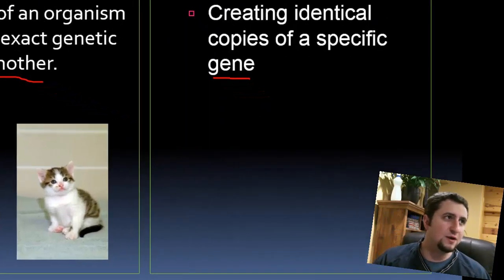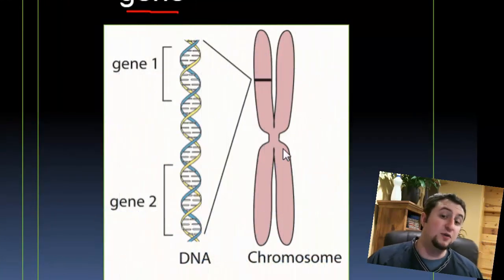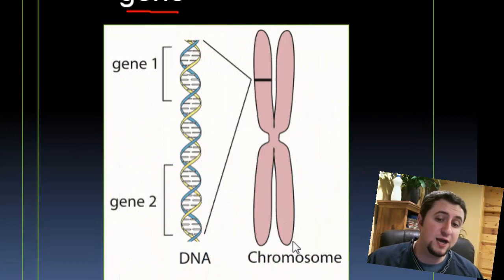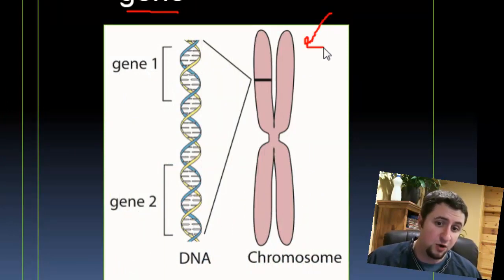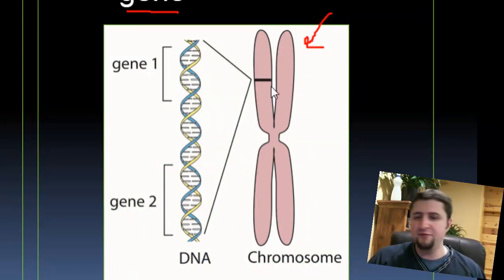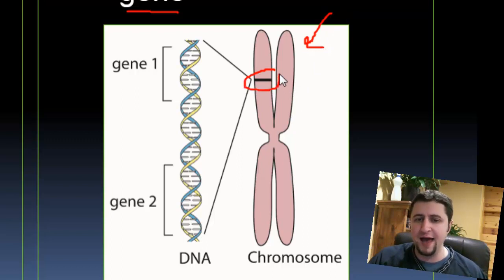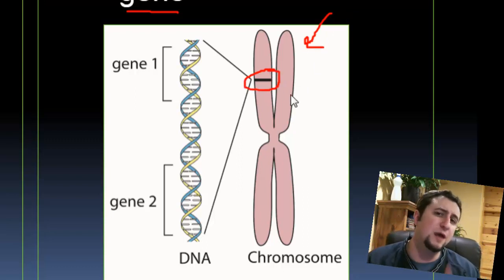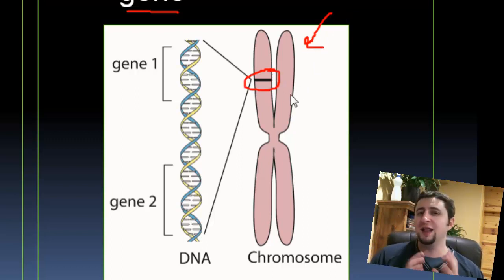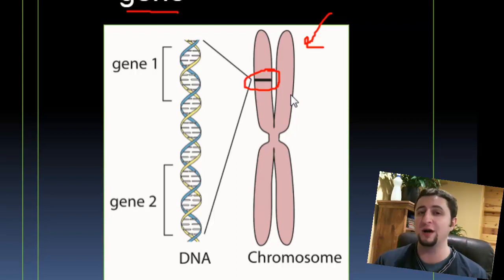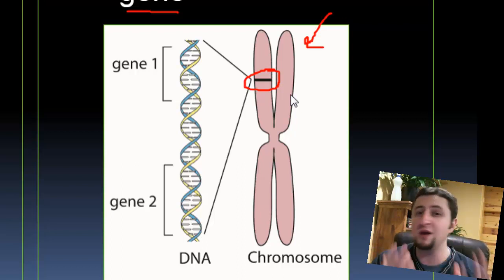The reason gene cloning is easier is that with a human being, we have 23 chromosomes. If we say that one gene in black is what we want to clone, that's a lot easier to do than cloning the entire organism which has all 23 chromosomes.